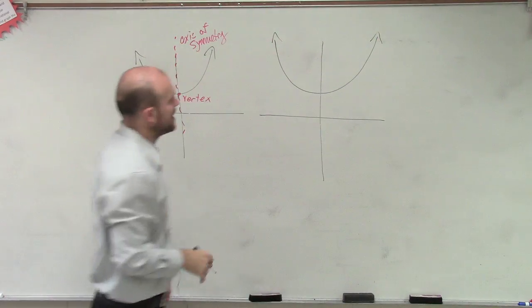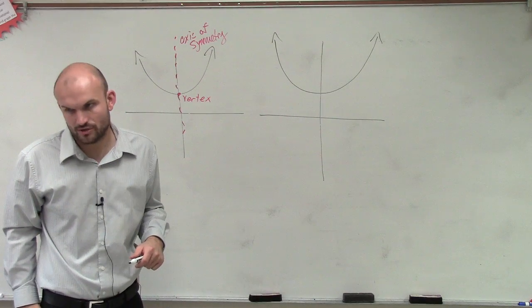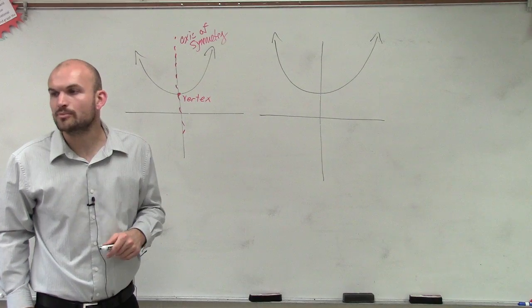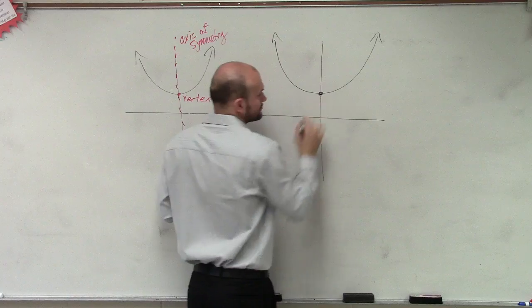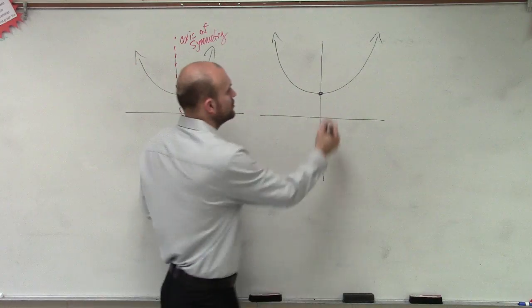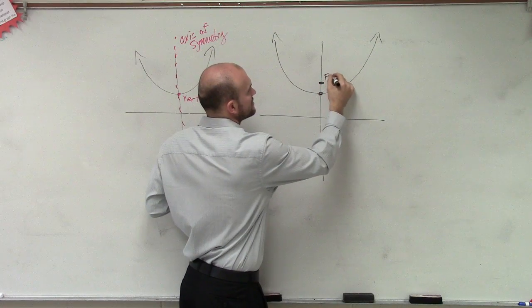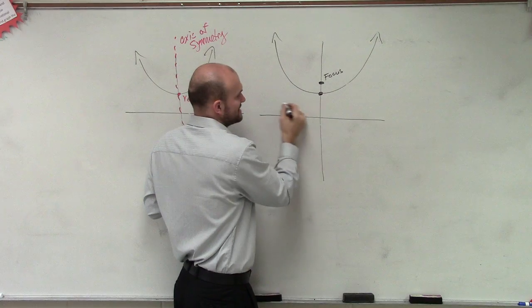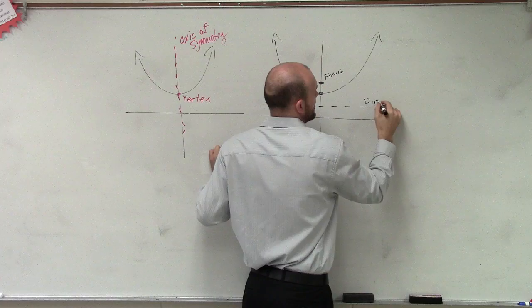So we have a parabola. We know that the vertex and axis of symmetry are there, correct? There's a couple other points I want to bring to your attention. So if here's my vertex, the distance from my vertex to a point, which we call our focus, is the exact same distance to a line, which we call the directrix.